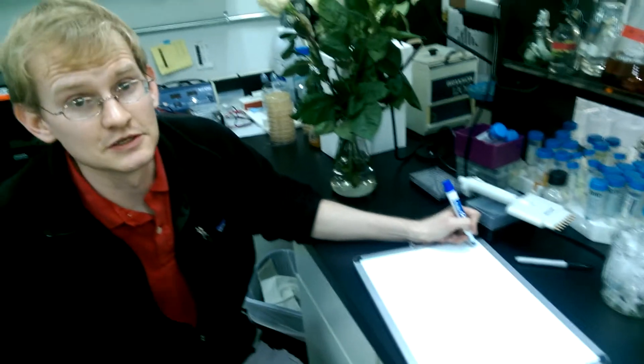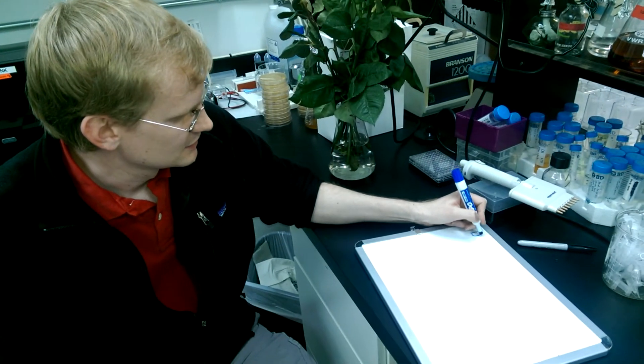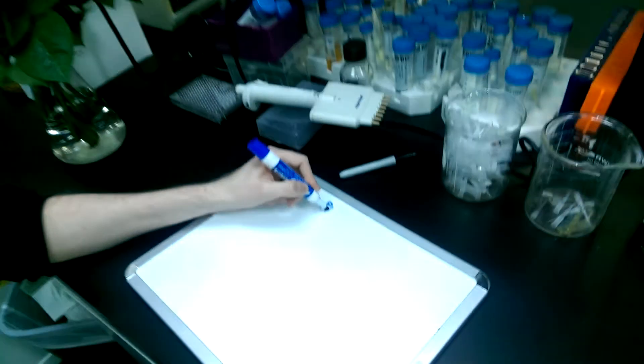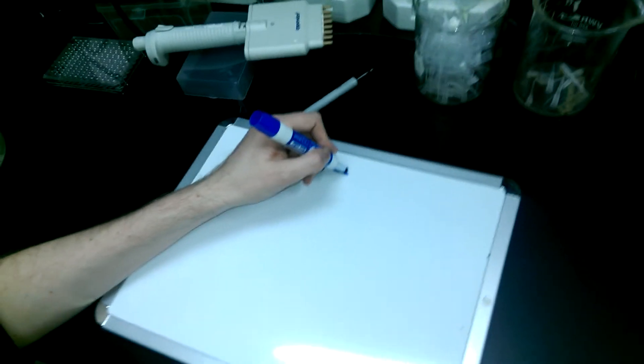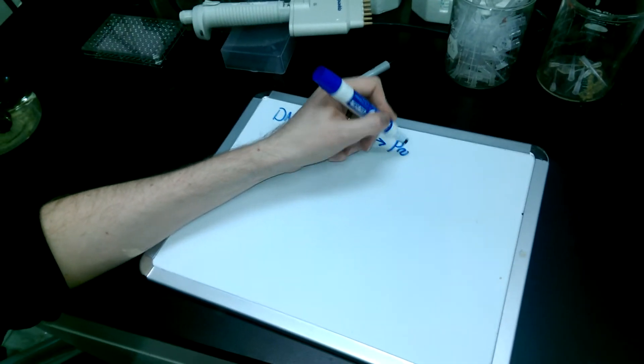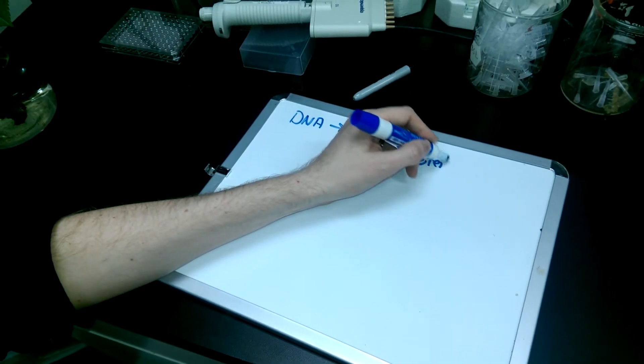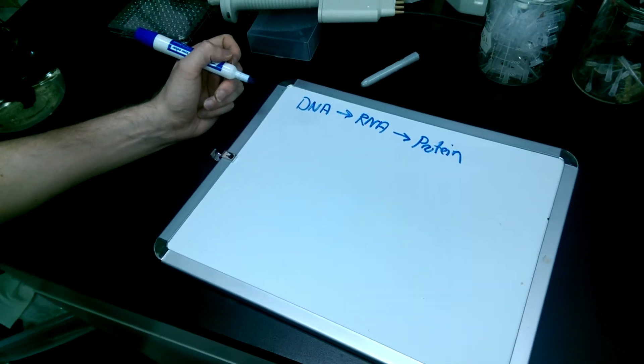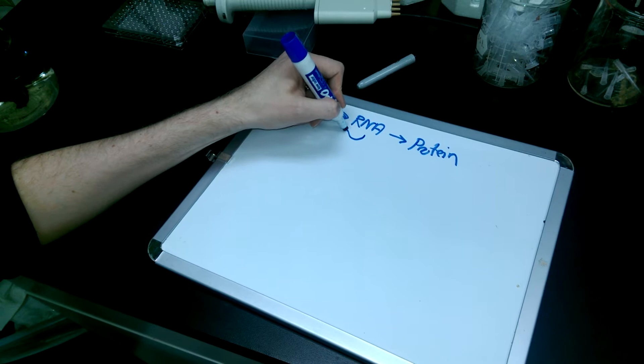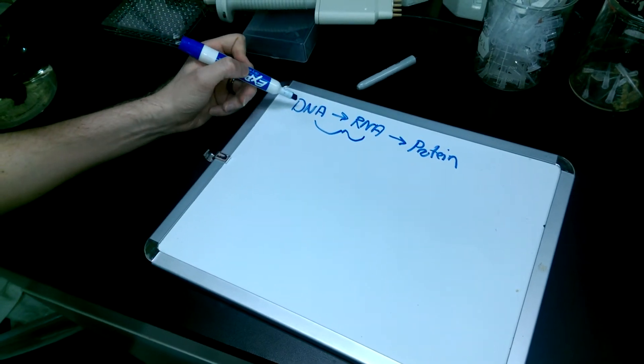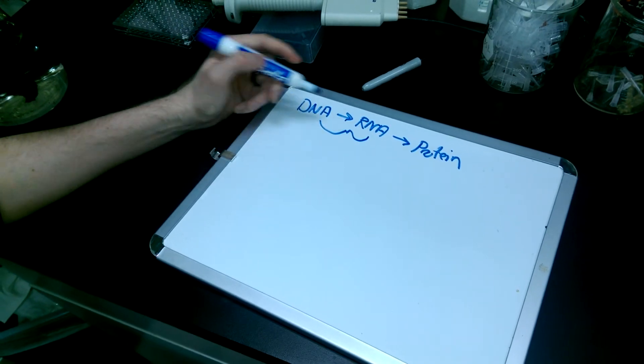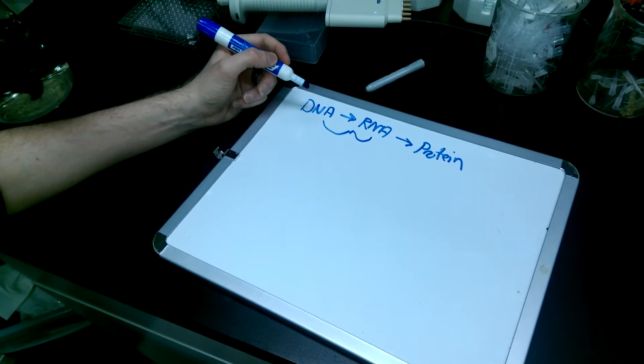So if we go back to the central dogma of biology, DNA goes to RNA goes to protein. And one way to think about how a gene gets expressed is to talk about this stage here, the step of going from DNA to RNA. So going from the genome to the messenger RNA that ultimately will make a protein.